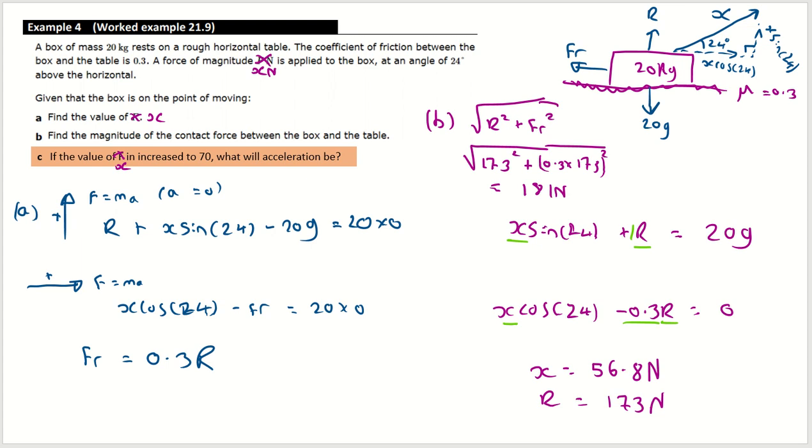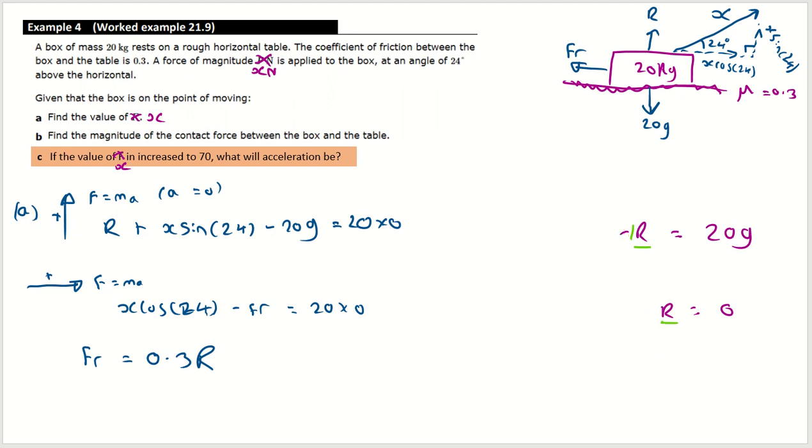I'm going to get rid now of these to do part C. So what's actually changing in part C? This is what I want to emphasize about using F equals MA and how adaptable it can be. This X has now changed to 70. So if we look at the vertical, the only thing that's really changed, we've got R plus 70 sine of 24 now, minus 20G. It's still in equilibrium vertically. That's not changed even though it's moving across the surface. So it's still equal to zero. This is for our vertical F equals MA, but A is zero. Not changed other than the extra 70.